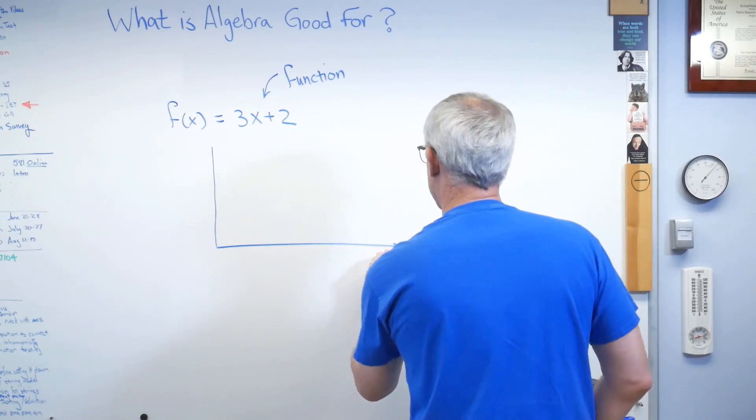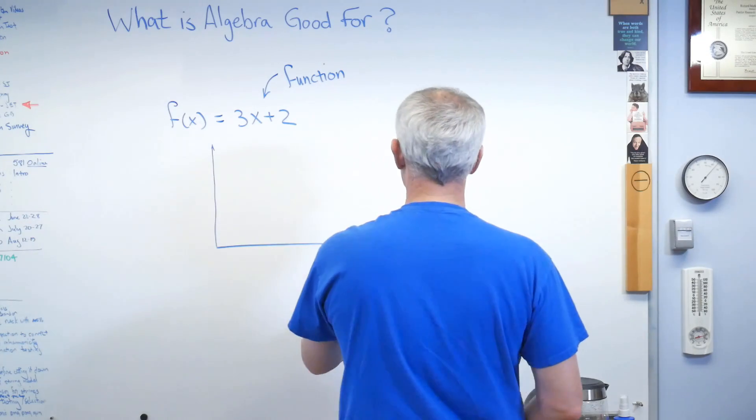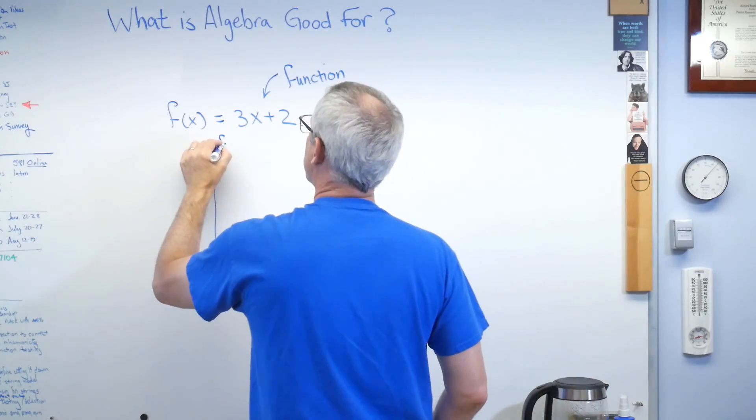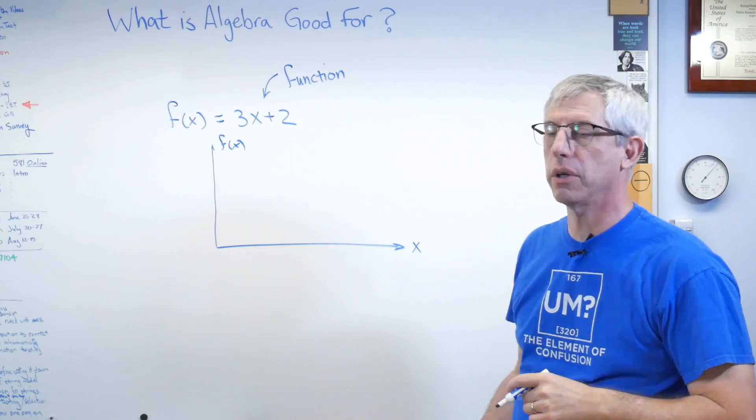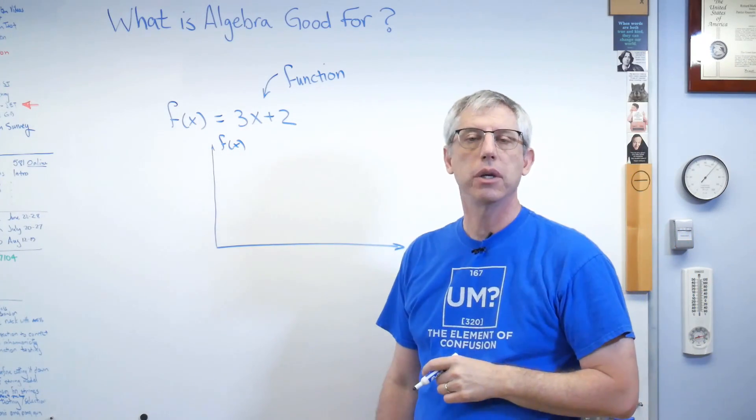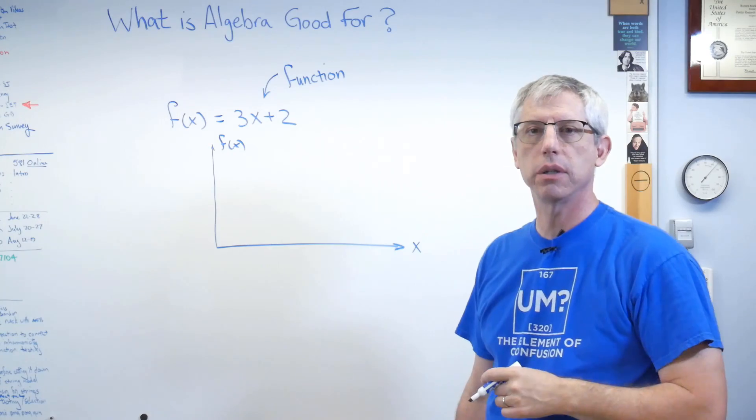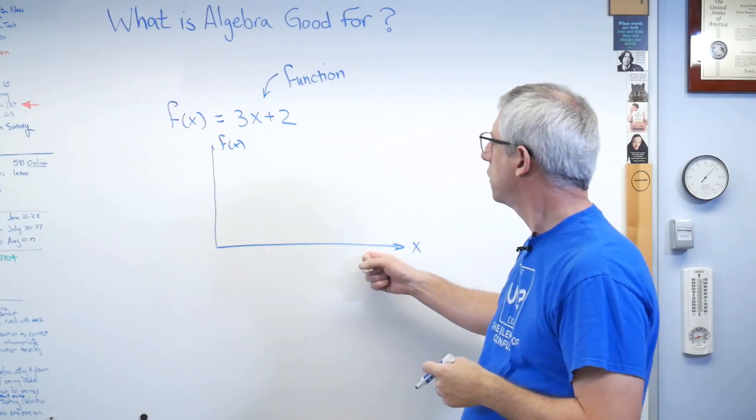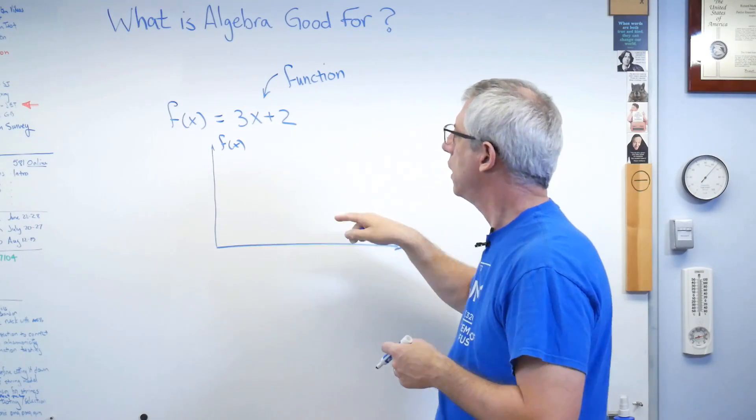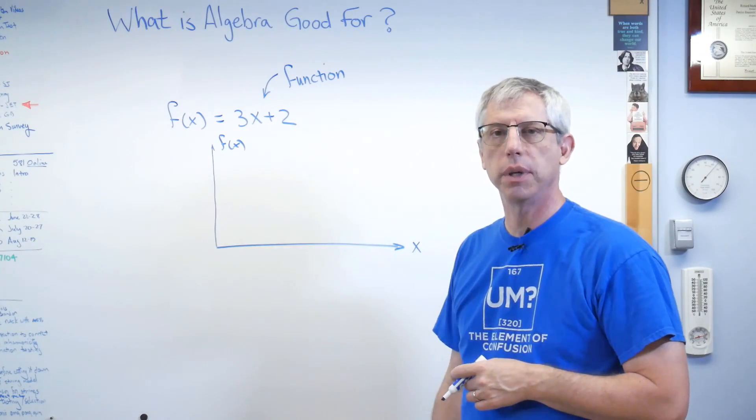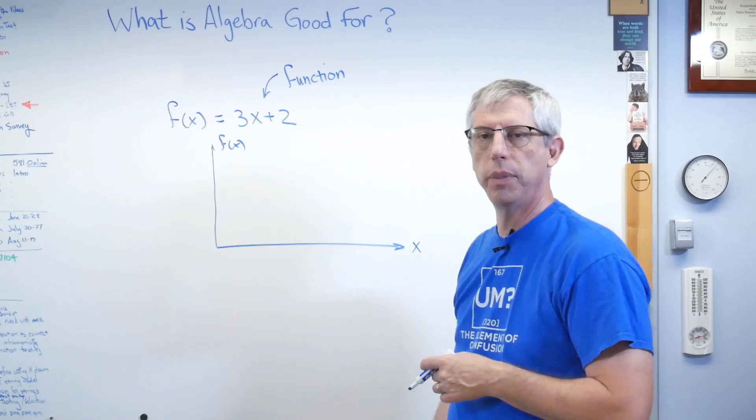So if I draw this now, I can select values of x and I can plot f of x on rectangular coordinates. These are also called Cartesian coordinates because Rene Descartes, the mathematician and philosopher, was one of the first people to suggest that you could, if you had two variables, you could plot them in perpendicular directions on a piece of paper and you could turn this into a picture.